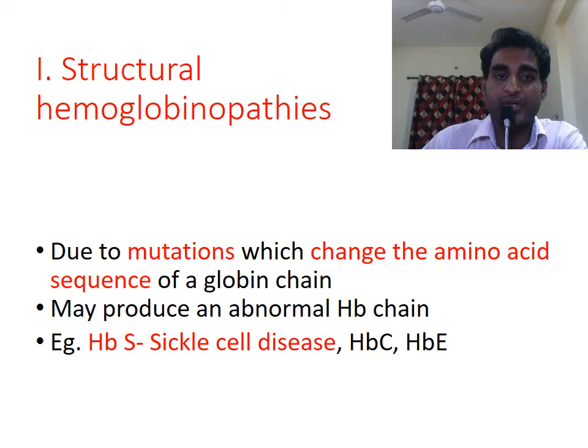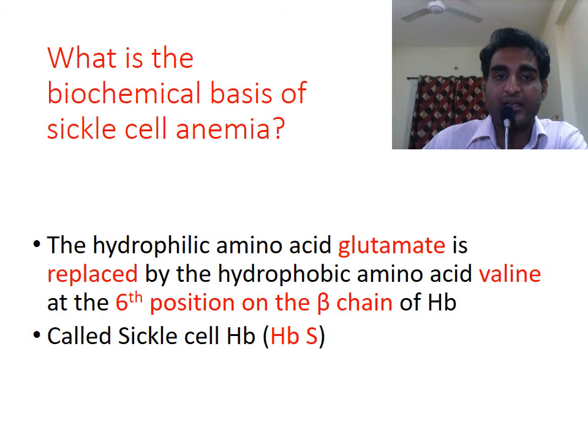Structural hemoglobinopathies occur due to mutations that change the amino acid sequence of the globin chain. This may lead to production of an abnormal chain. A common example of structural hemoglobinopathy is sickle cell disease.